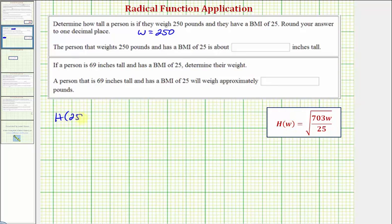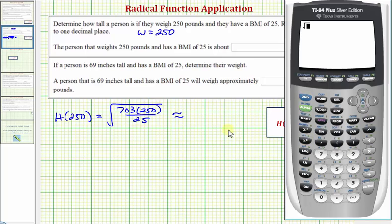H of 250 would be equal to the square root of 703 times 250 divided by 25. Notice we could simplify this, but let's just go to the calculator. We have the square root, which is second X squared. We'll put the numerator in parentheses, so open parenthesis, 703 times 250, close parenthesis. There's the numerator under the square root, and then divided by 25, which is still under the square root. Enter.